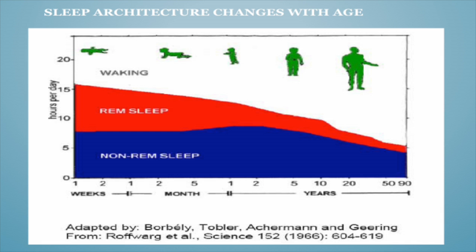Getting children to have a good night's sleep early on will benefit them as adults — they will also achieve better at school because they'll be more alert. As an adult you need roughly eight hours sleep and spend more time in non-REM, which is very deep sleep. You need to spend most of your time in deep sleep to recuperate and feel refreshed in the morning, and a small period in REM.